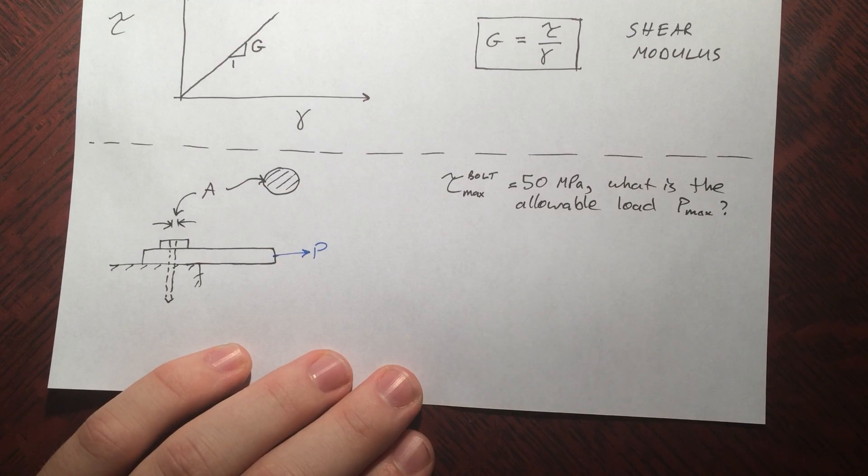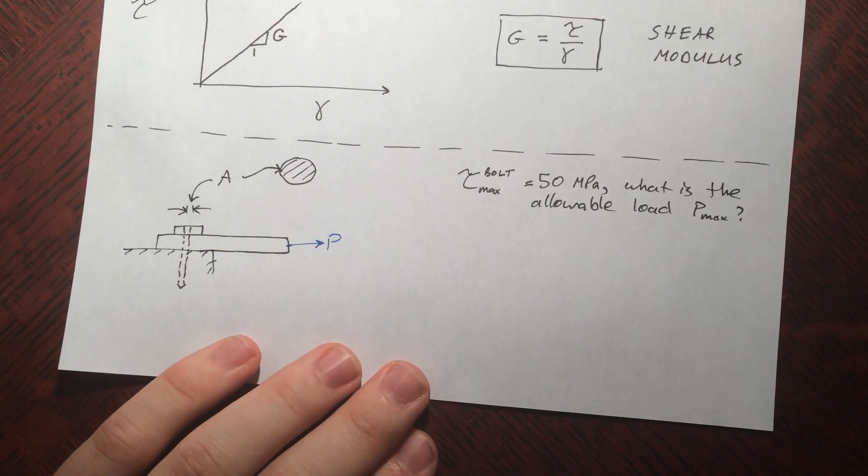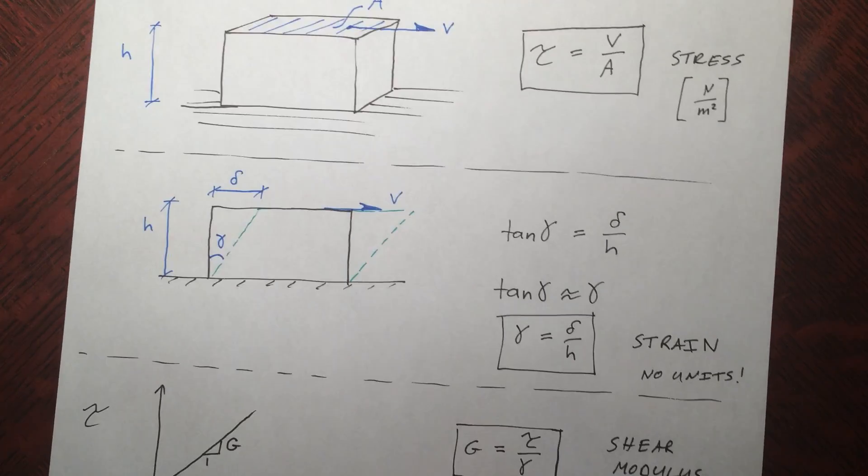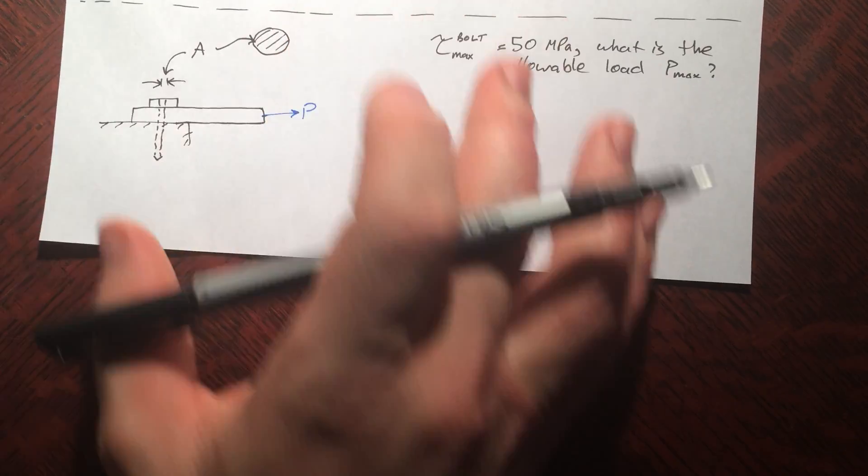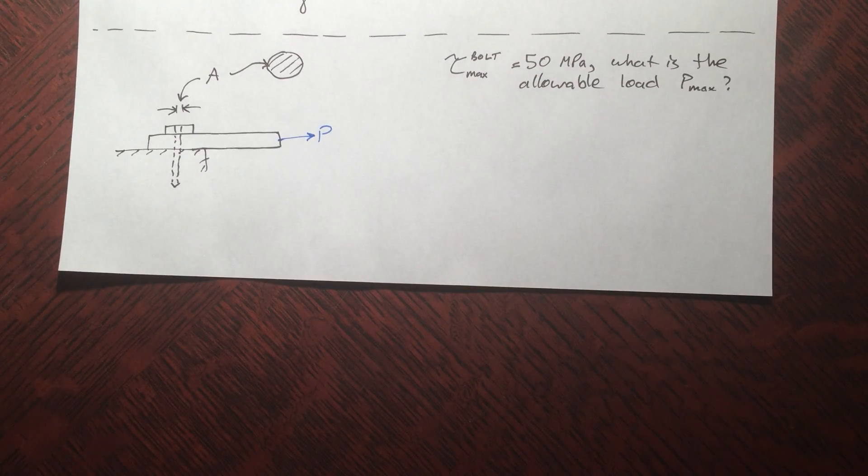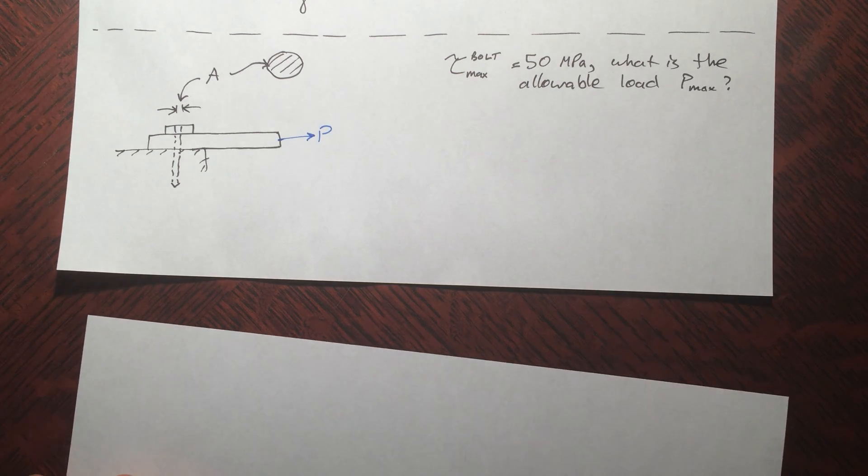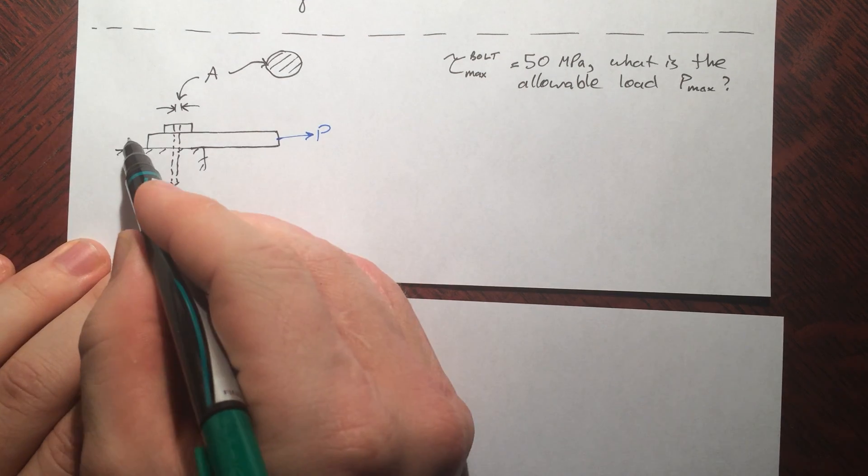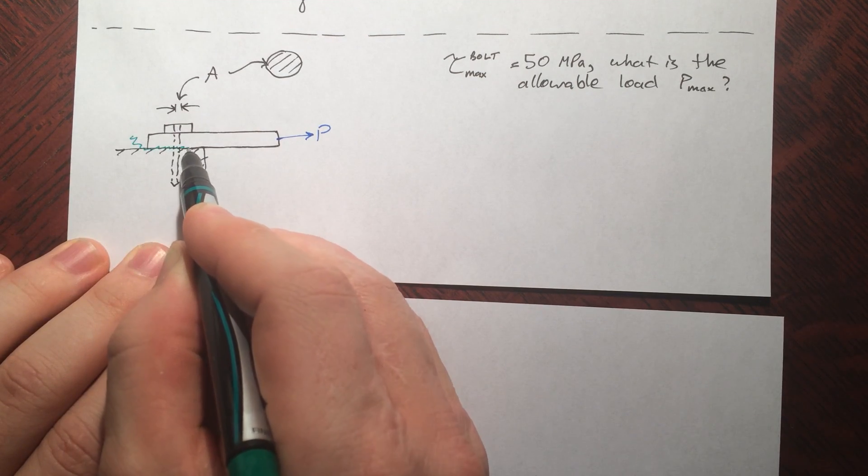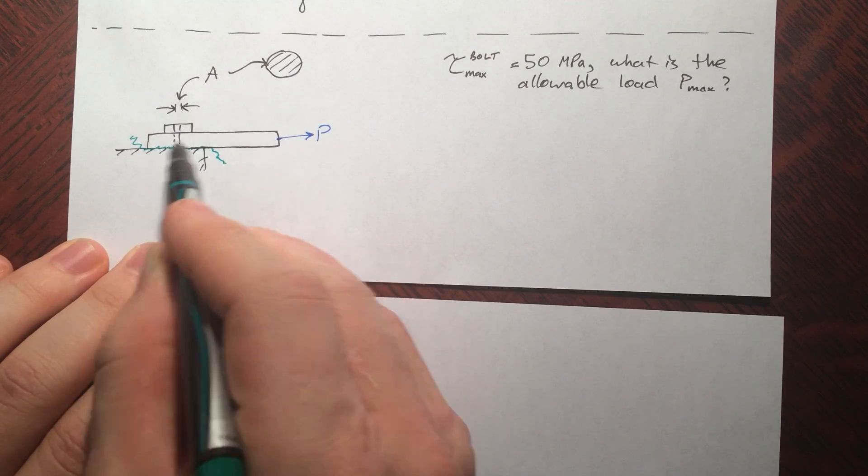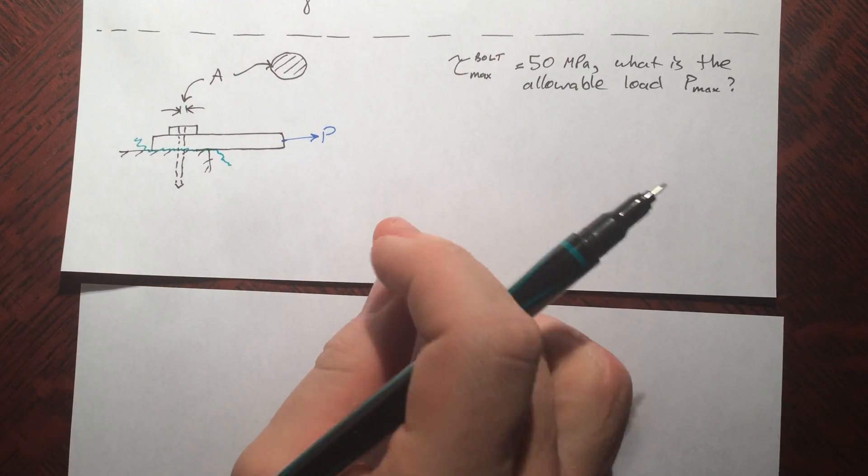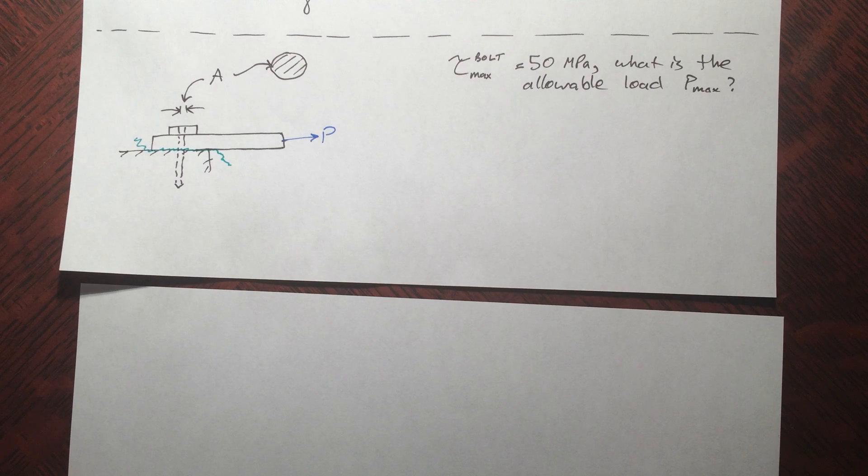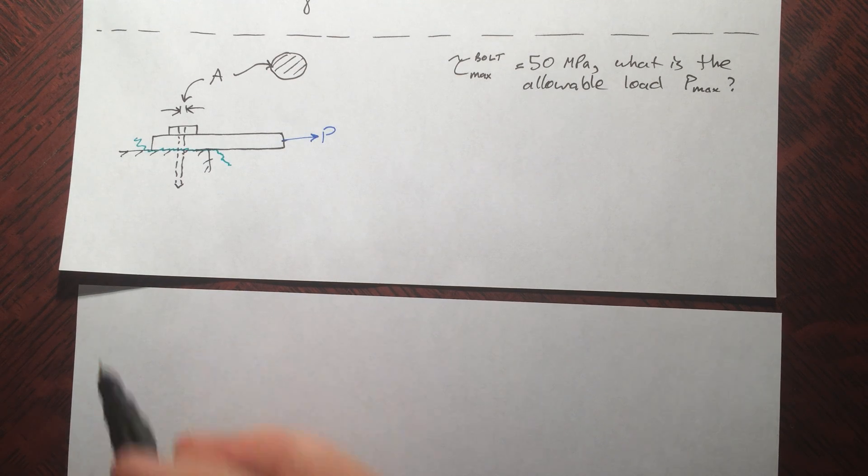We want to figure out if the maximum allowable tau max for the bolt is 50 MPa, what is the allowable load P max? How much force can we pull on this before this bolt will shear off? It'll shear off at 50 MPa. This is kind of a common question. Just like we did before, we can make a free body diagram. We need to find the internal forces, so we need to make a cut right down this seam here between the counter and the bar that's on top. We'll do a free body diagram of the bar.